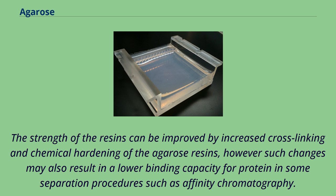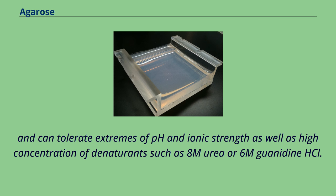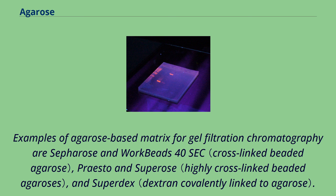The strength of the resins can be improved by increased cross-linking and chemical hardening of the agarose resins. However, such changes may also result in a lower binding capacity for protein in some separation procedures such as affinity chromatography. Agarose is a useful material for chromatography because it does not absorb biomolecules to any significant extent, has good flow properties, and can tolerate extremes of pH and ionic strength as well as high concentrations of denaturants such as 8M urea or 6M guanidine HCl. Examples of agarose-based matrix for gel filtration chromatography are Sepharose, Workbeads 40 SEC, Superose, and Superdex.